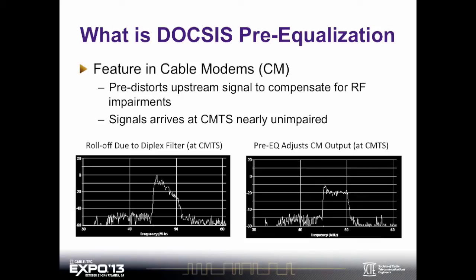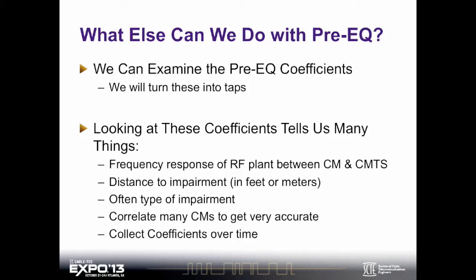Basically what happened here is there was some impairment in my upstream. The cable modem was arriving at the CMTS with roll-off. The CMTS said it didn't like that roll-off and told the cable modem to pre-distort the signal so that when it arrives at the CMTS, it's nice and flat. This makes the signal easier for the CMTS to demodulate. Normally we'd be really happy with just the fact that we're getting an improved signal-to-noise ratio, an improved MER at the CMTS — sometimes our SNR improves by as much as 2 to 10 dB in the upstream. So that's pretty cool.